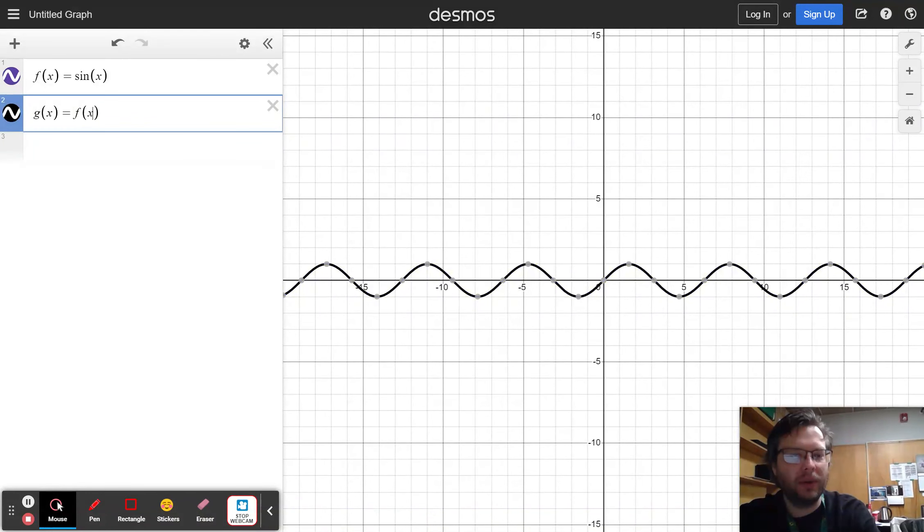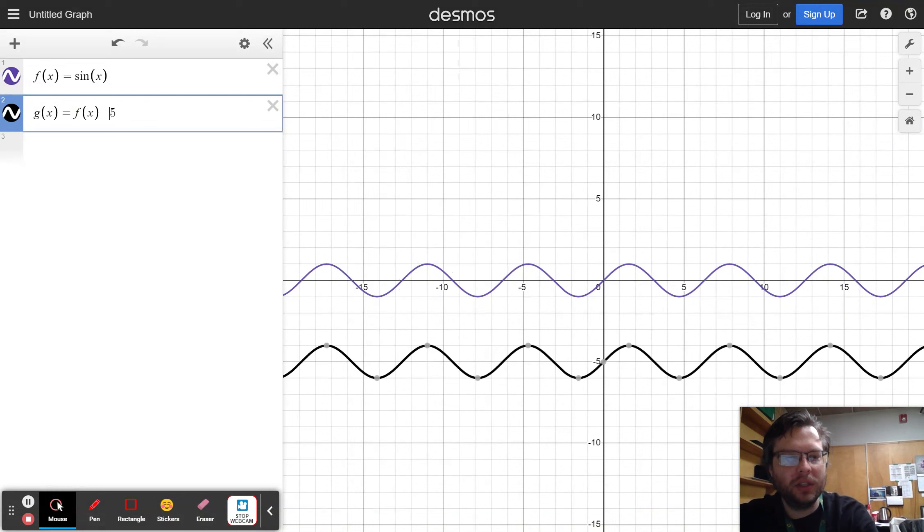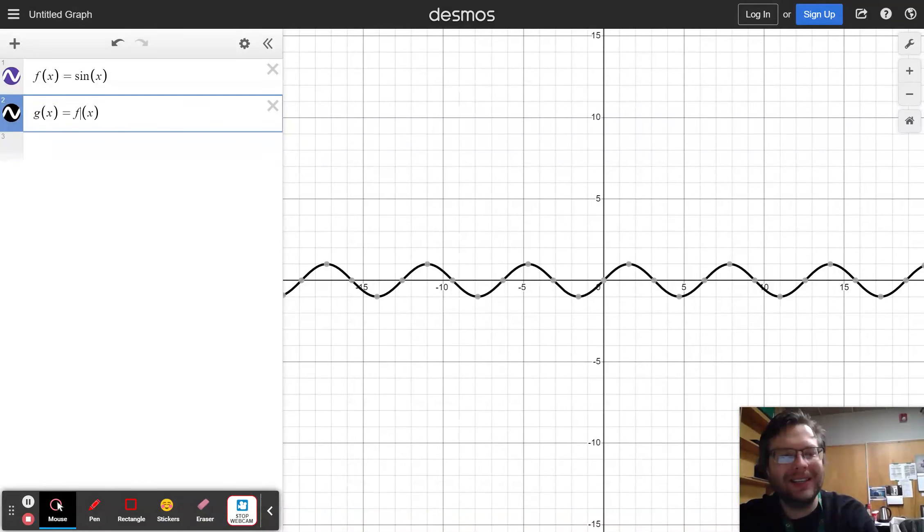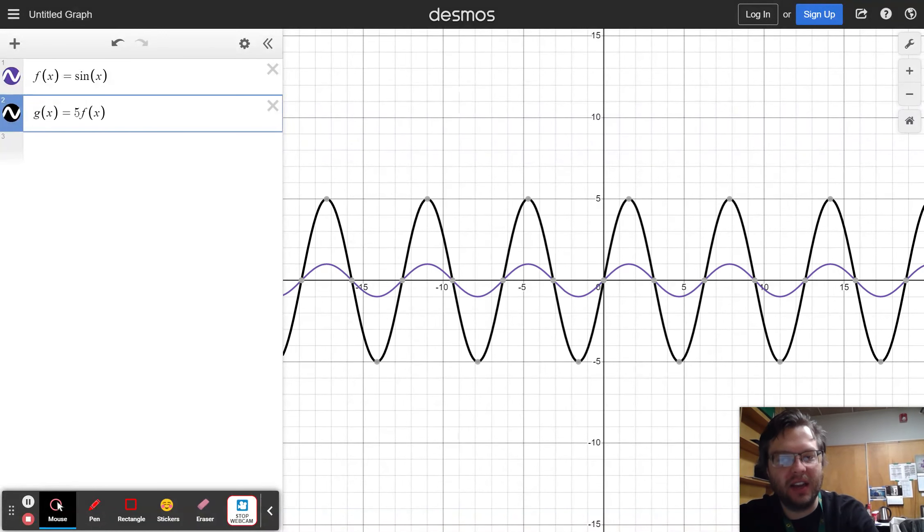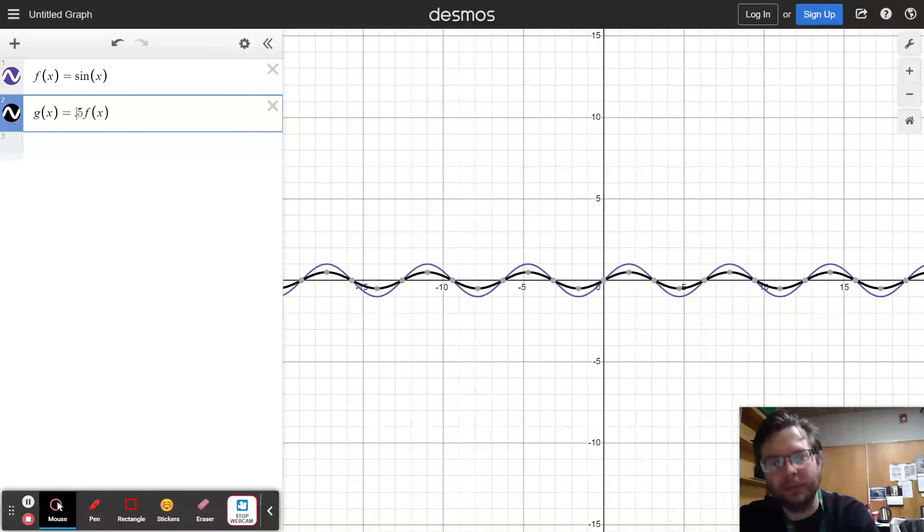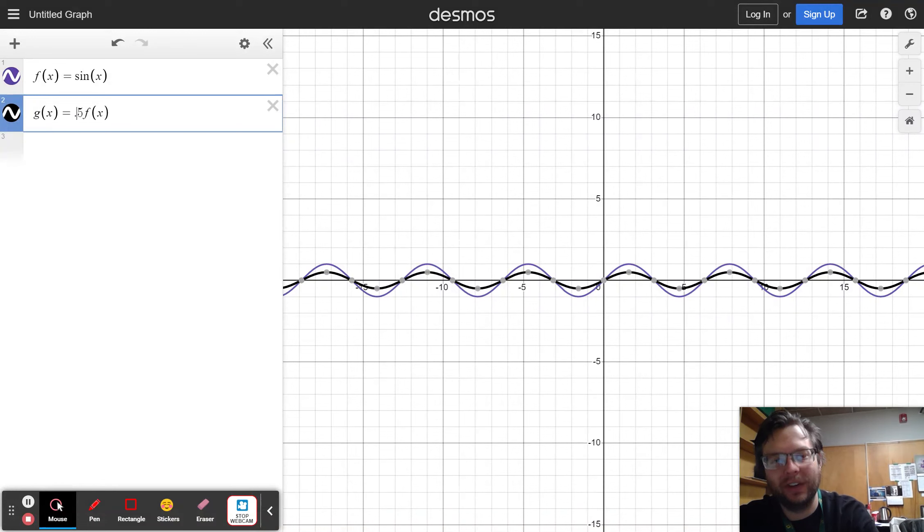So, just like how, if I wanted to translate it vertically, I can add or subtract on the outside of the function. Here, the same thing is true. If I want to dilate it vertically, I can multiply by a big number, or by a small number to make it dilate vertically.